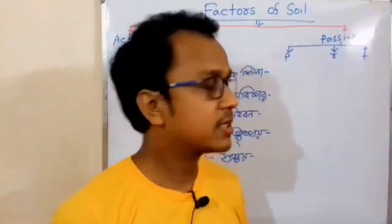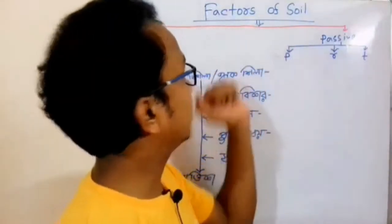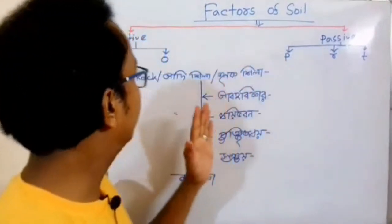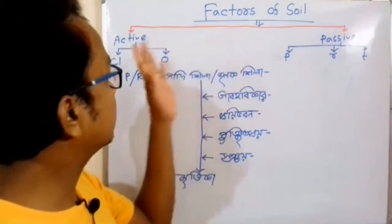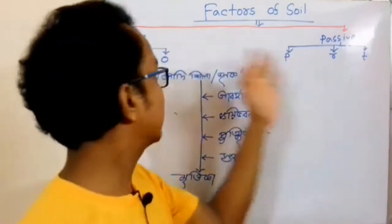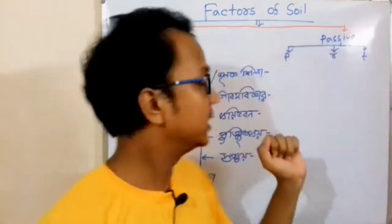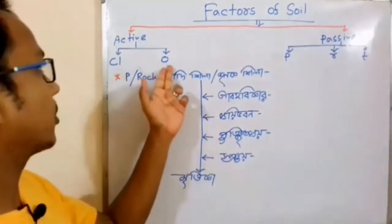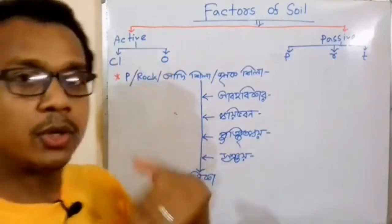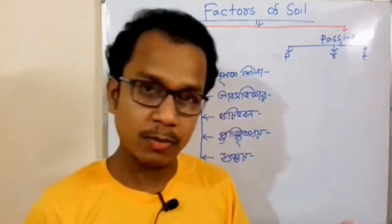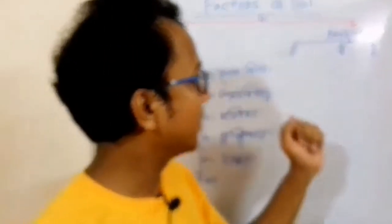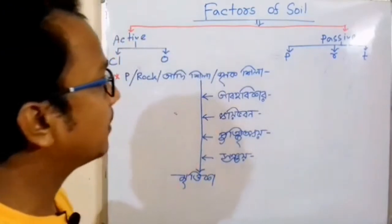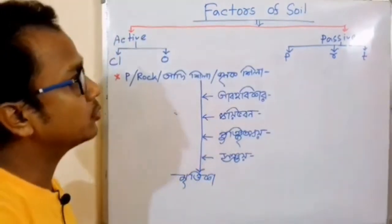Today I am going to talk about the soil factor. The soil factor has active factors and passive factors. This video covers climate and organism. Today I am going to talk about the passive factor. The passive factor has 3 components.